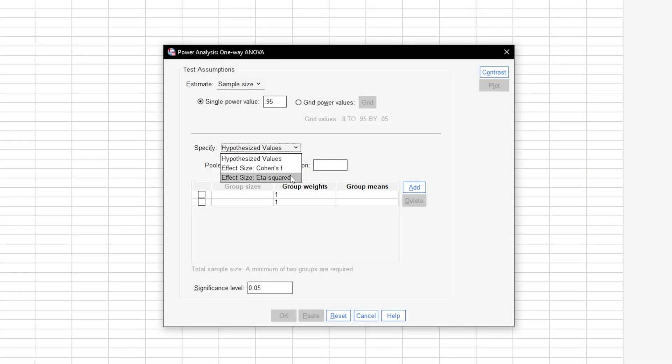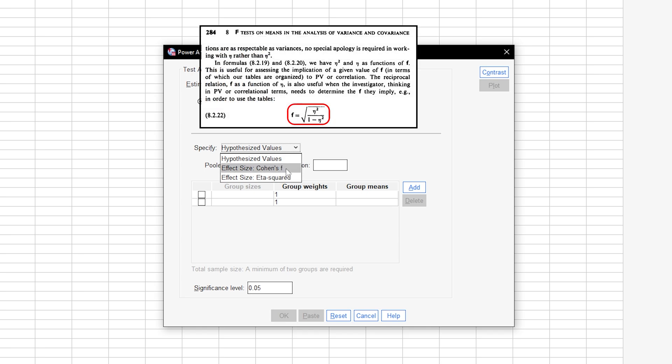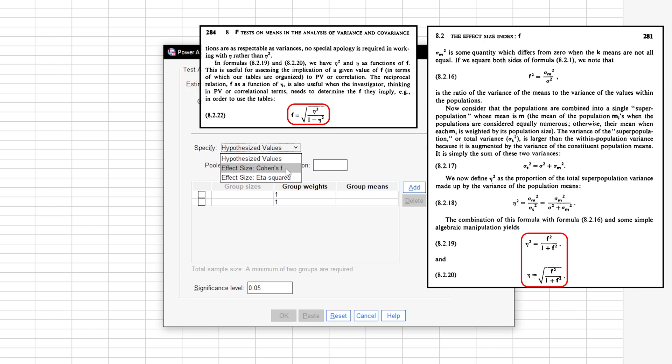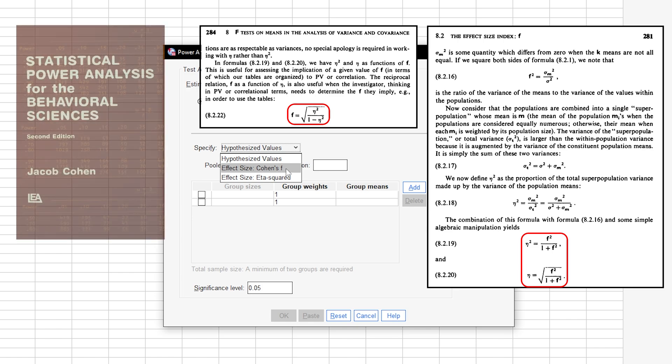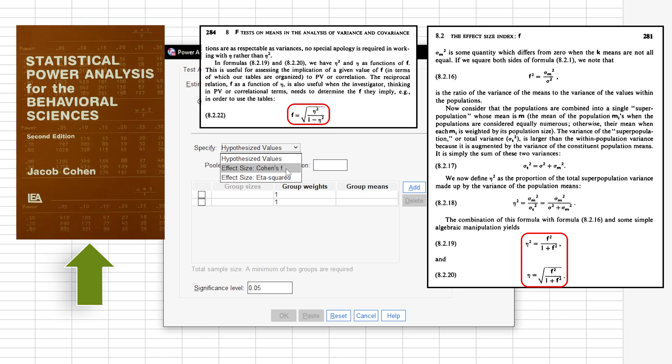Those effect sizes can either be Cohen's f or eta squared, depending on what comparable studies report. You can also transform f to eta squared and the other way around using the formulas provided in Cohen 1988, page 281 and 284 respectively.